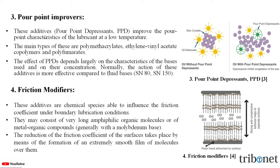The second one is pour point improvers. These additives, i.e. pour point depressants, improve the pour point characteristics of the lubricant at low temperature. The main types are polymethacrylates, ethylene vinyl acetate co-polymers, and polyfumarates. The effect of PPDs depends largely on the characteristics of the bases used and on their concentrations. Normally, the action of these additives is more effective compared to fluid bases SN80, SN150.